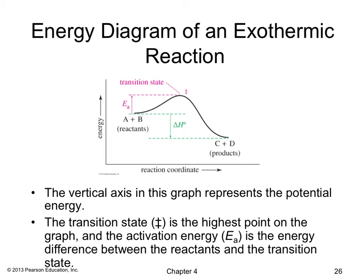You should know how to draw reaction energy diagrams. For an exothermic reaction, plot reaction coordinate versus energy: reactants are higher in energy than products. The activation energy is the energy required to reach the transition state, denoted with a double dagger symbol. The difference between reactant and product energy levels is ΔH. Make sure to label the double dagger, reactants, products, ΔH, and activation energy.